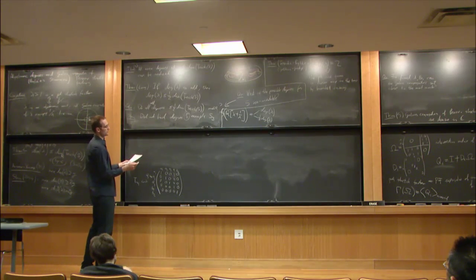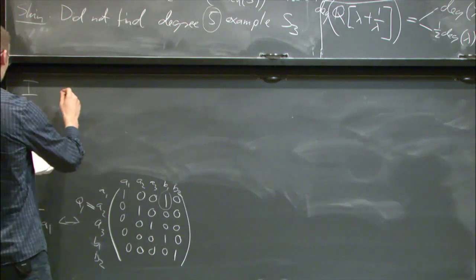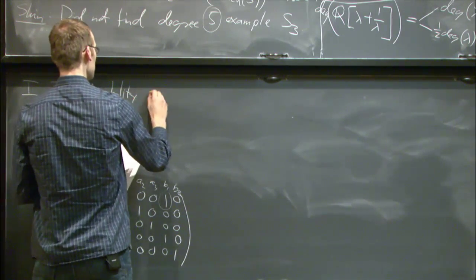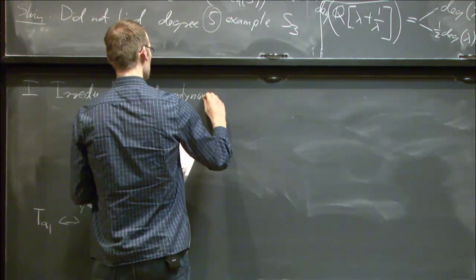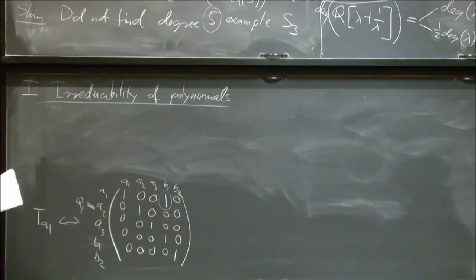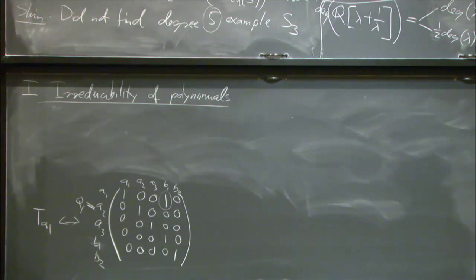Let me begin with the irreducibility criterion. One reason irreducibility is complicated in the pseudo-Anosov setting is that all polynomials are monic with constant coefficient plus or minus 1. So simple irreducibility criteria like mod-p or Eisenstein criteria don't apply.